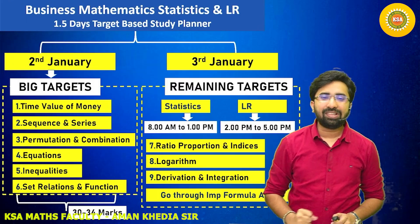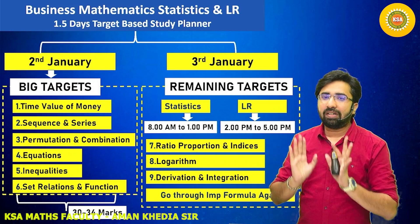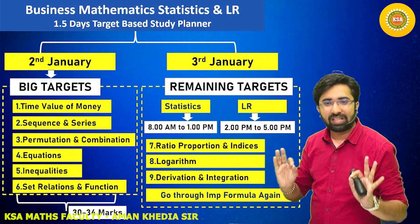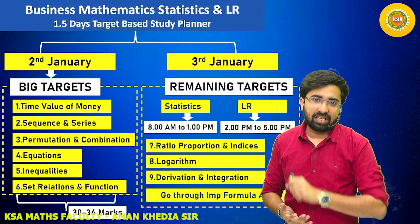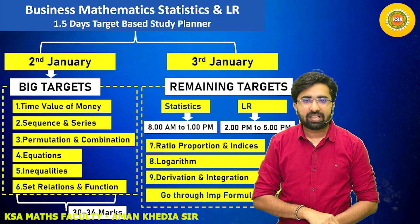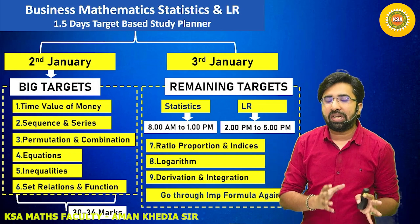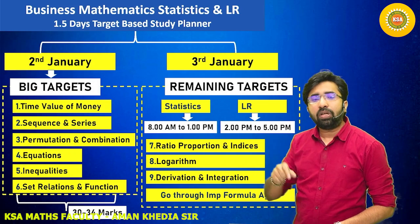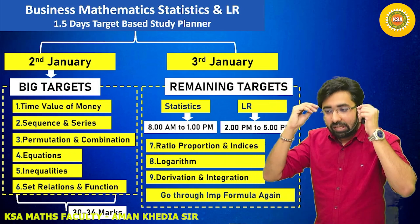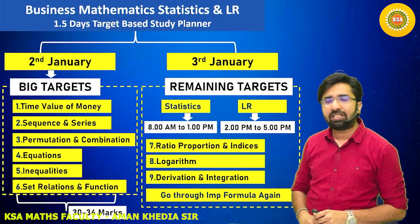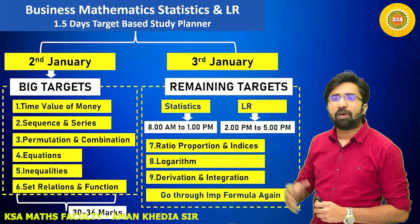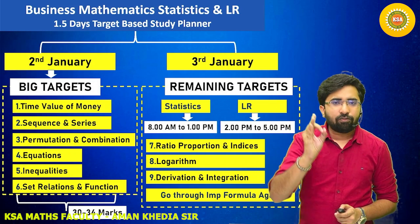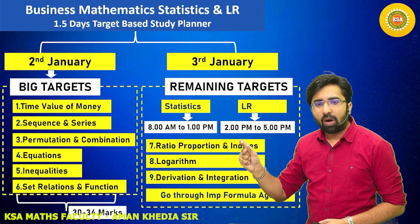This is the timetable. Once you are done with the law paper today, don't discuss that paper — it's not the right time. Today is 2nd January; set big targets, not small ones. Don't just solve the easy parts today and keep the hard parts for tomorrow. Aim to cover 30–34 marks out of 40 today: Time Value of Money, Sequence and Series, Permutation and Combination, Equations, Inequality, Set-Relation and Function.